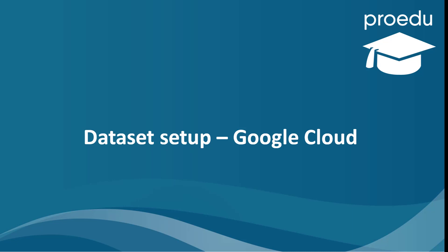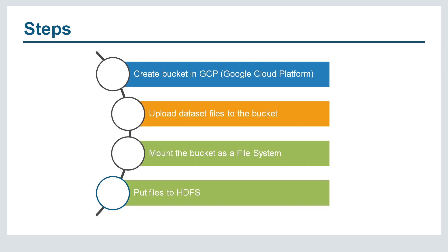Hi all. In this lecture I'll tell you how to do data setup on Google Cloud Platform. We have four steps: step one is to create a bucket in GCP, then uploading the dataset files to the bucket, then mounting the bucket as a file system, and finally put the files to HDFS.